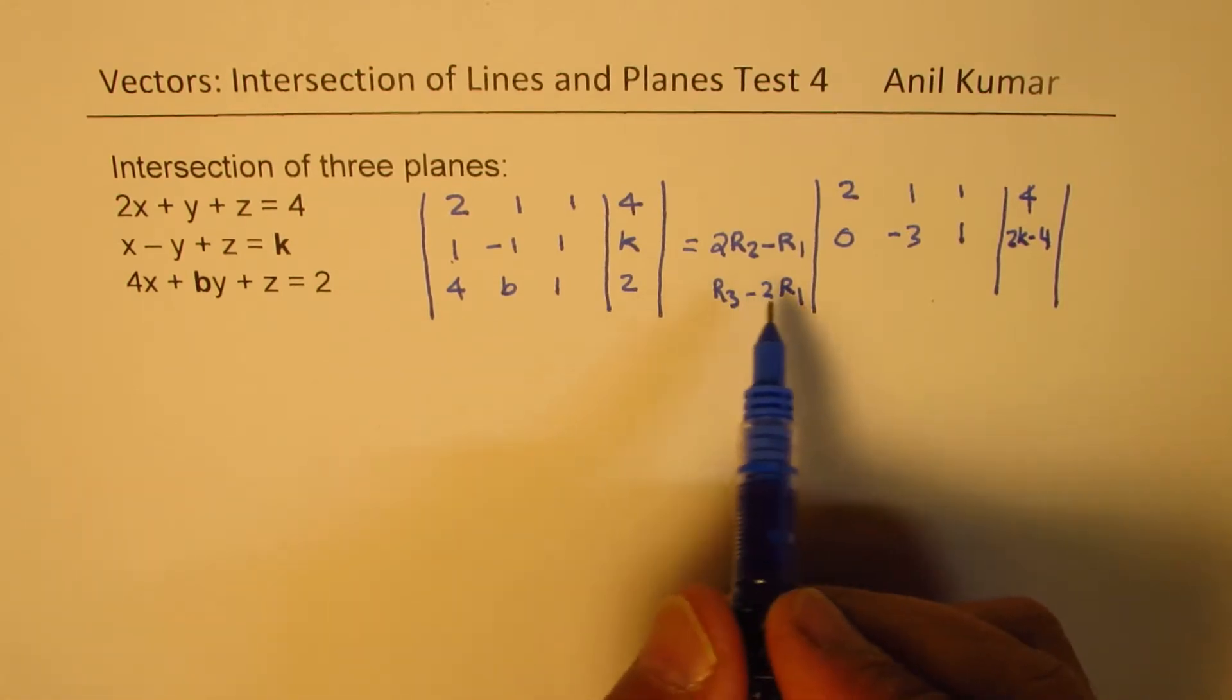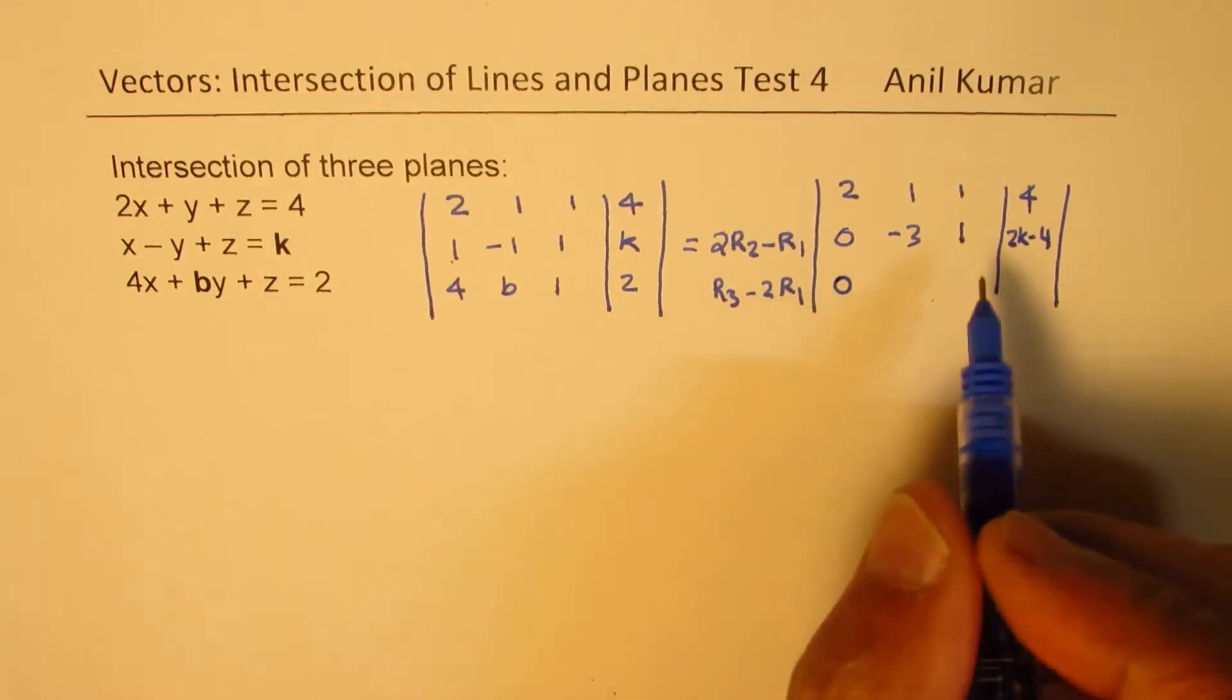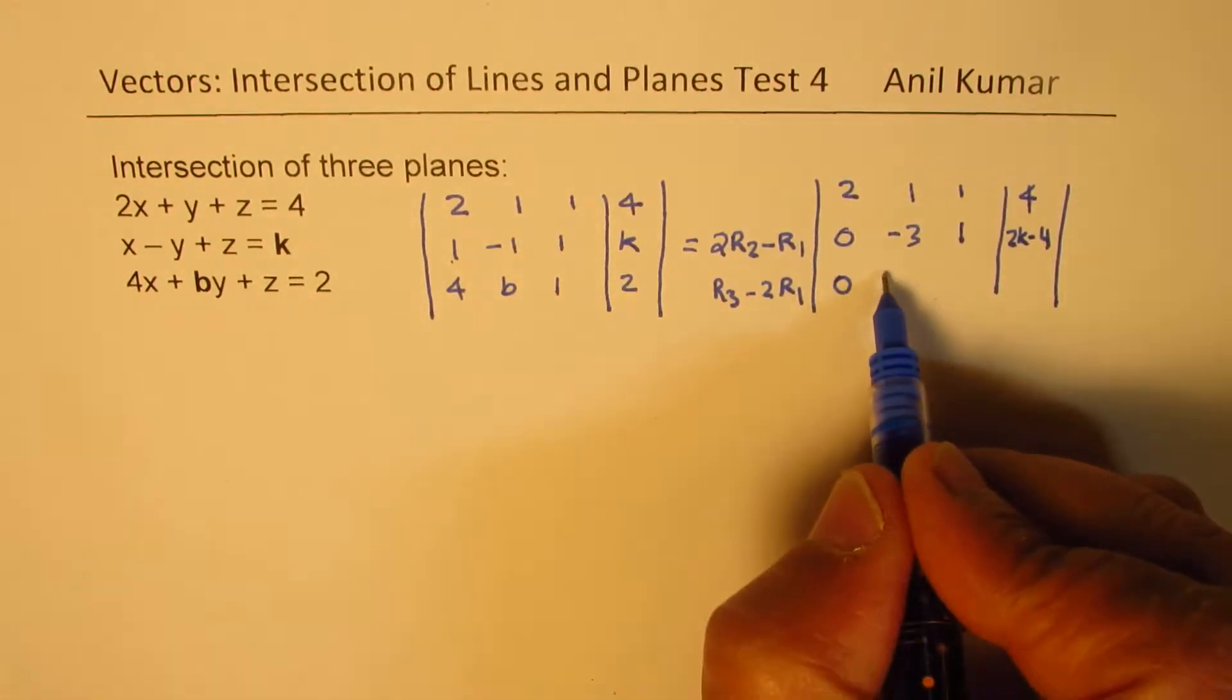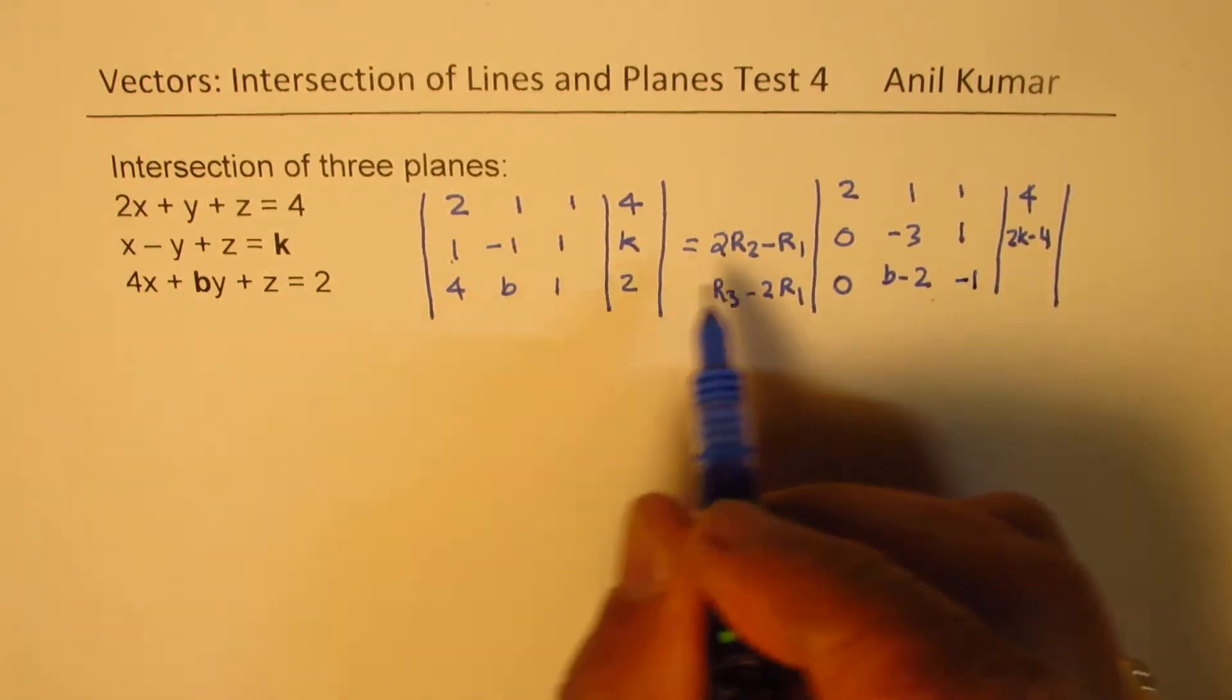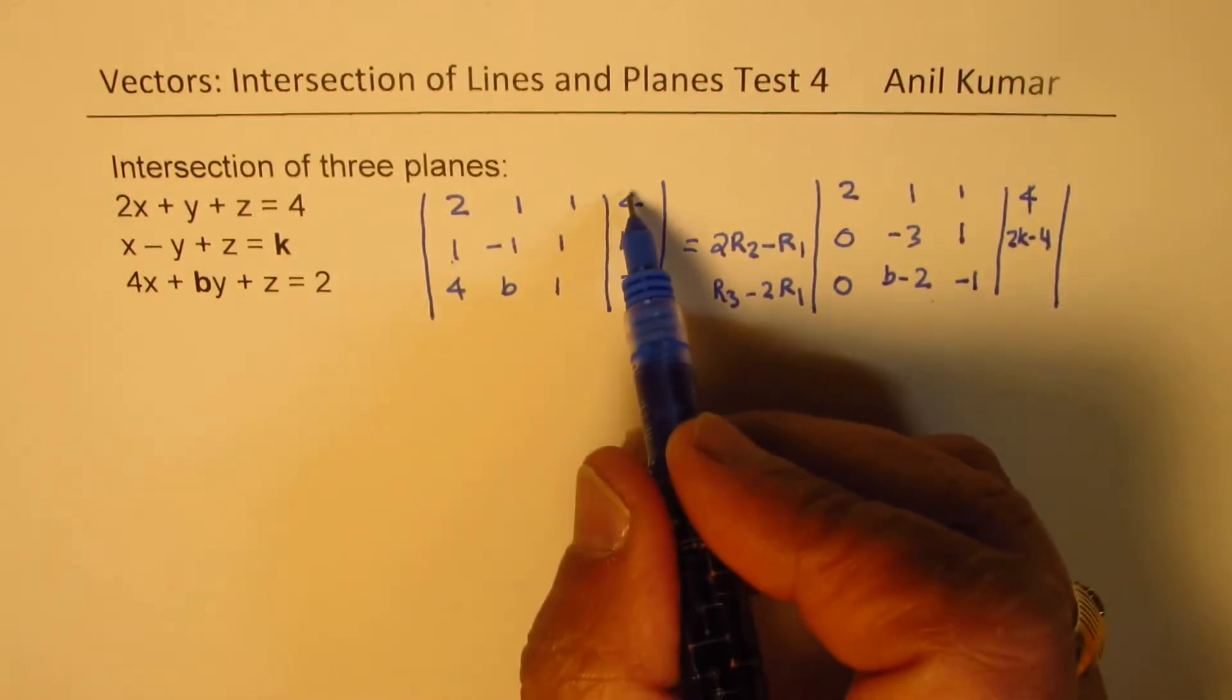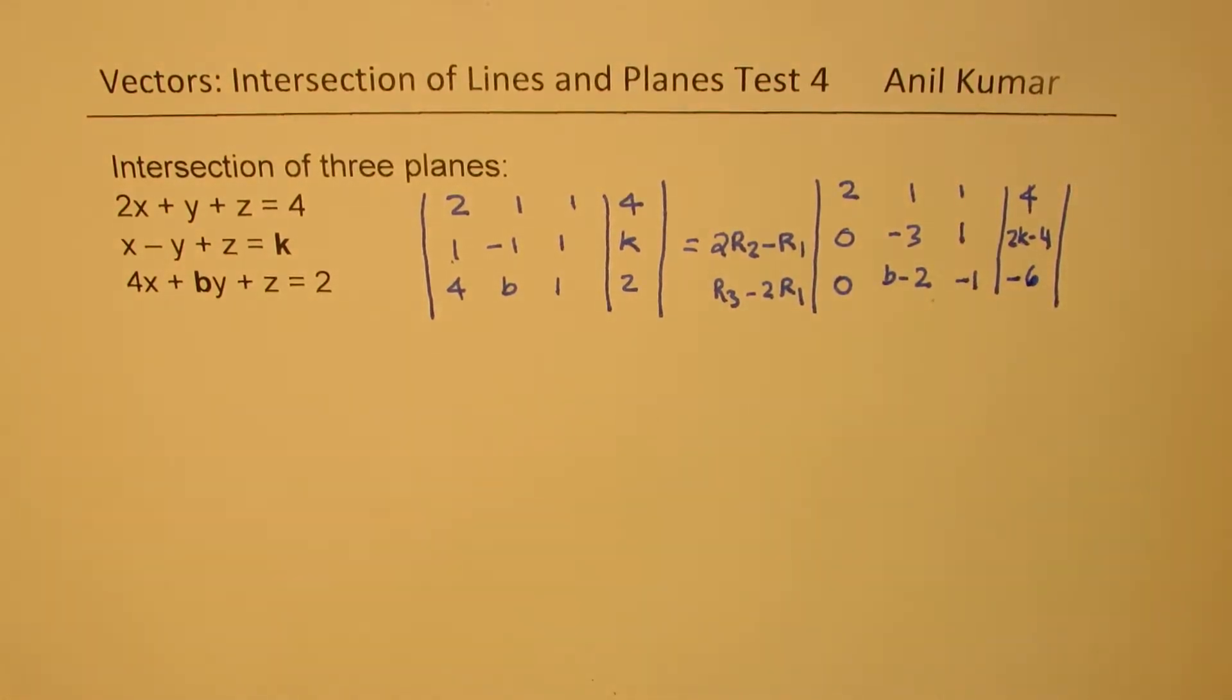r3 minus 2 times r1. So when I take away this will be 0. 2 times r1, so b minus 2, 1 minus 2 will be minus 1. And here we get 2 minus 8, which is minus 6. So that is what we get.